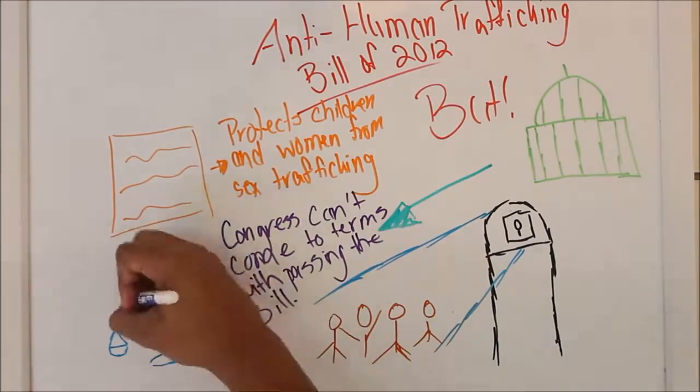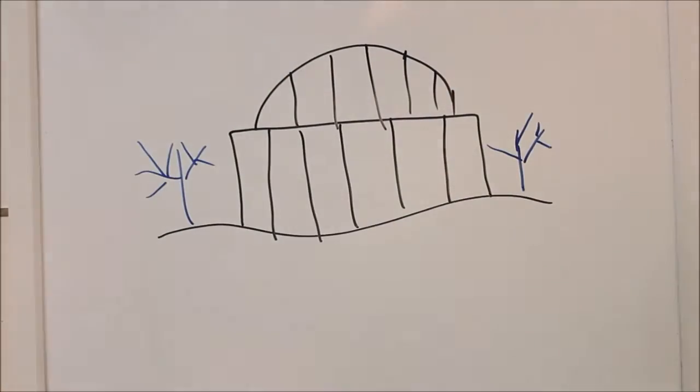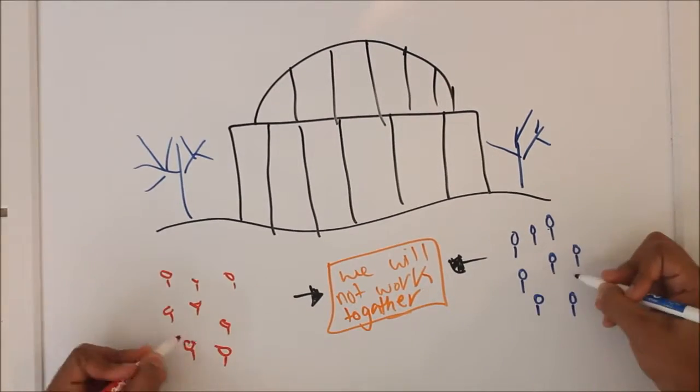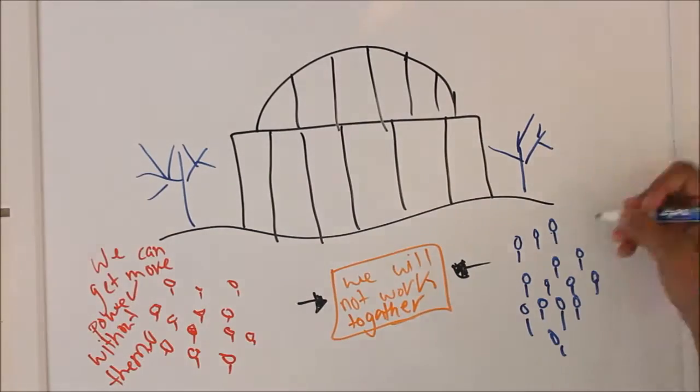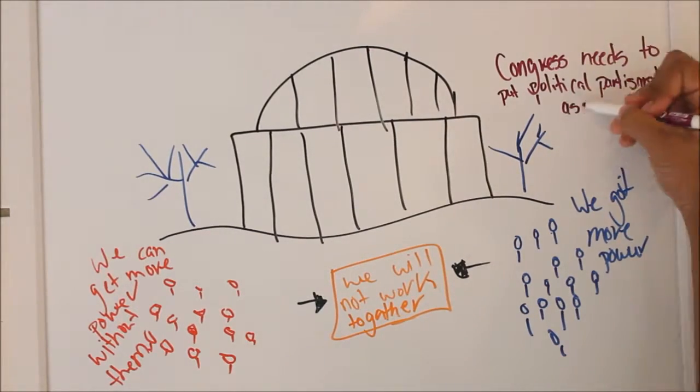According to reporter Jonathan Suri, the polarized environment of Congress has led to a lack of cooperation between the political parties. Lamar University states that political parties oftentimes will go against the opposing party's agenda to tip political party power in their favor. Congress must realize when to put political partisanship aside.